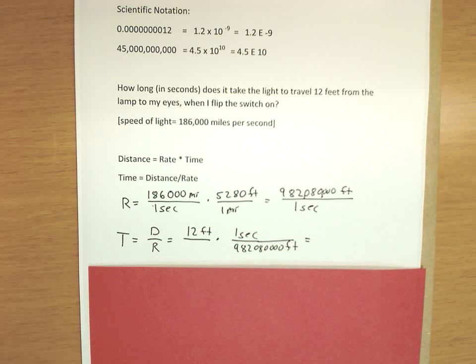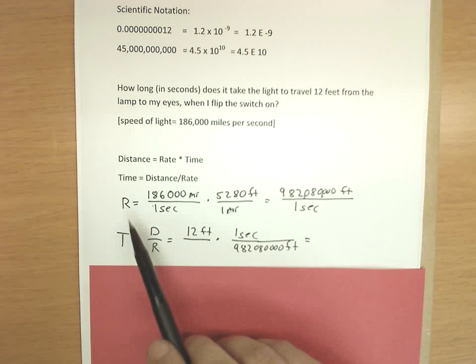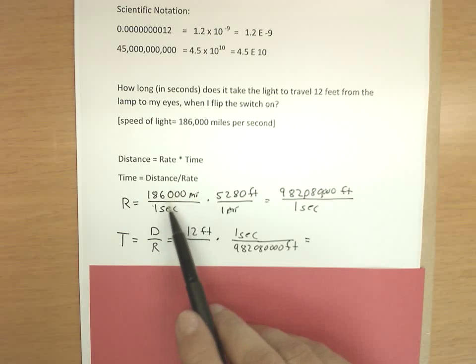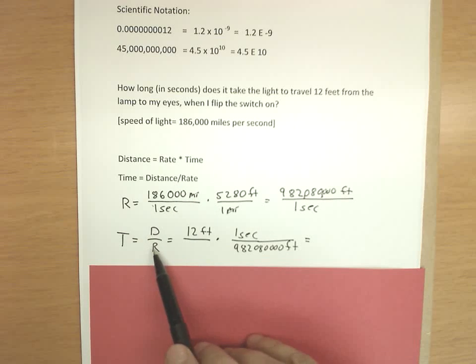Now the traditional way to do this problem at this point would be to solve this relationship, time equals distance divided by rate, and solve it for time. So we have distance over rate.